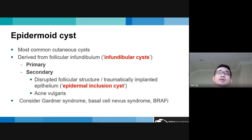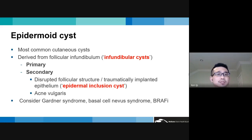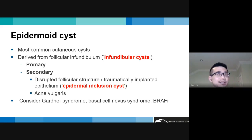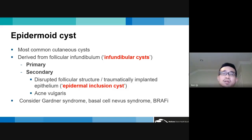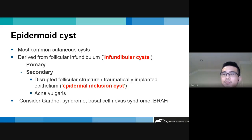When you encounter a patient with multiple epidermoid cysts — more than you'd expect, or at a younger age — consider whether there's an underlying cause such as Gardner syndrome. Inquire about a family history of colon polyps, or even medications such as BRAF inhibitors.